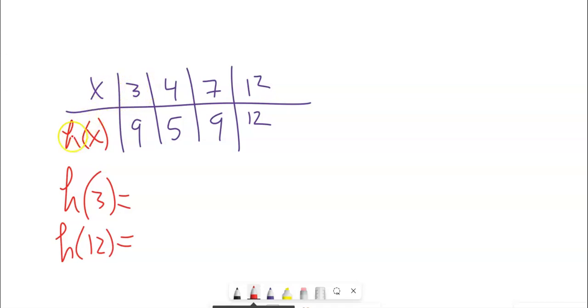So when X is three, H of three is nine. When H is 12, H of 12 is 12. See it right there. Is this one to one? The answer is no. Because three goes to nine, seven also goes to nine. This output comes from multiple inputs. It's still a function.